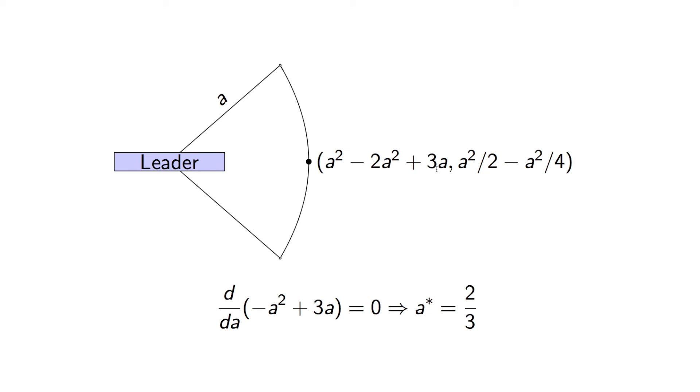And again, now the leader is just going to try and optimize this expression. It's again an inverted parabola. So we have minus A squared plus 3A. We set that to 0, and we get A star is equal to 2 thirds.